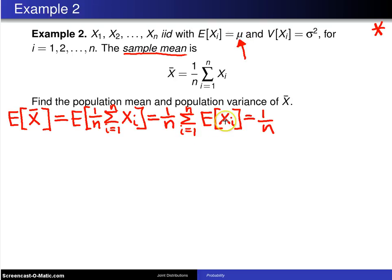So, this is like adding up μ n times, and that is n times μ, and the n's cancel and you get μ. So, the expected value of the sample mean is the population mean, and statisticians have a special way of writing that.